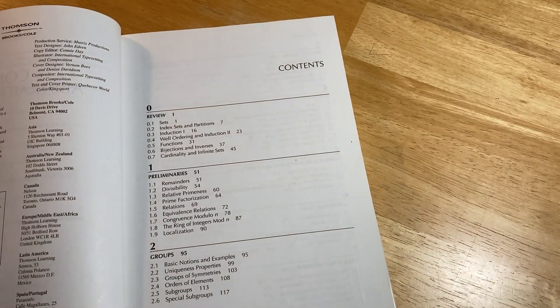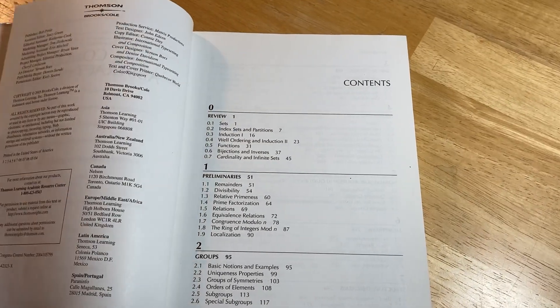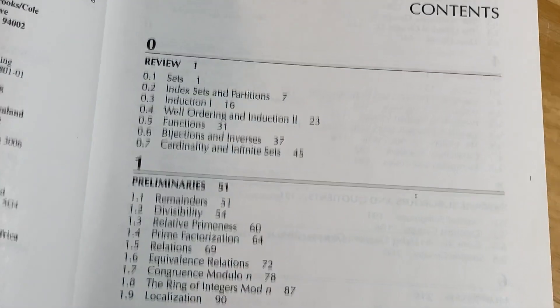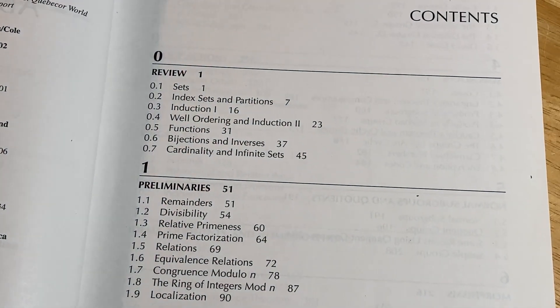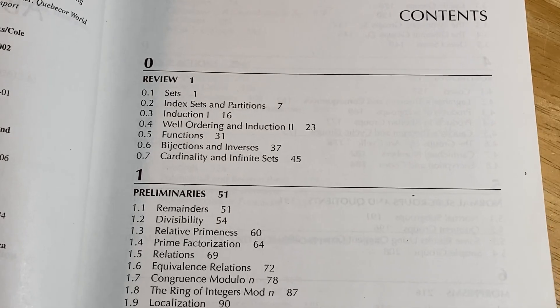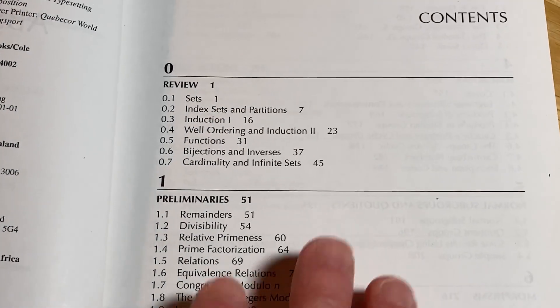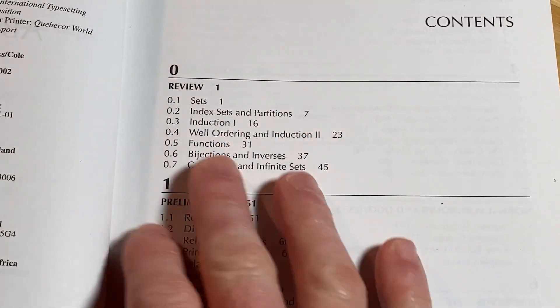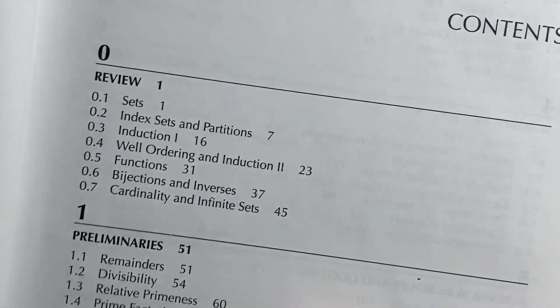This book is worth getting. I'll leave a link in the description in case you want to check it out. It has a lot of topics that other books don't have. It also takes a very general approach. A lot of the theorems are stated for a family of sets instead of just two sets. So he generalizes everything quite well.